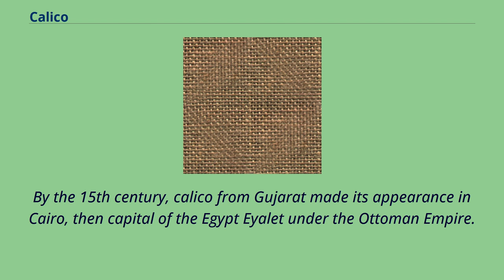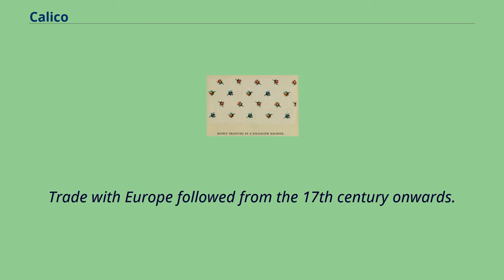By the 15th century, calico from Gujarat made its appearance in Cairo, then capital of Egypt under the Ottoman Empire. Trade with Europe followed from the 17th century onwards.